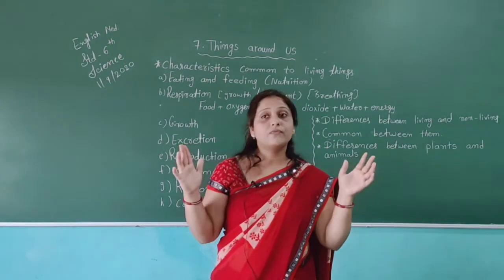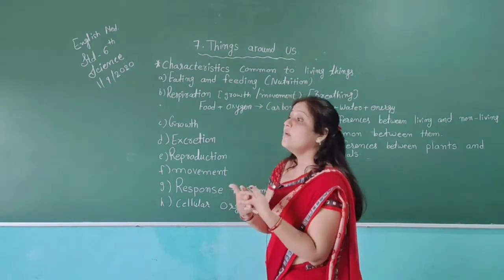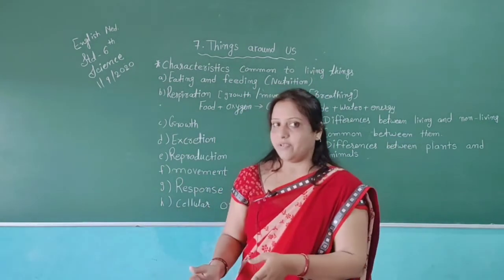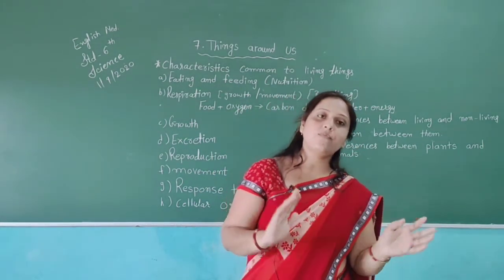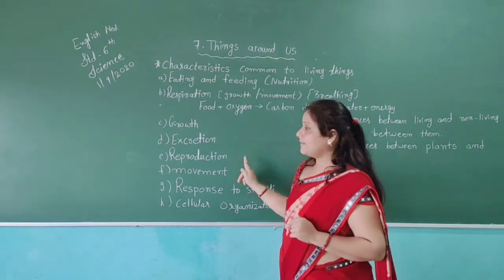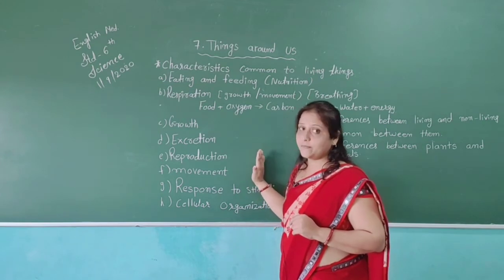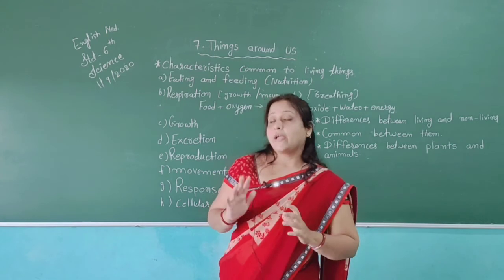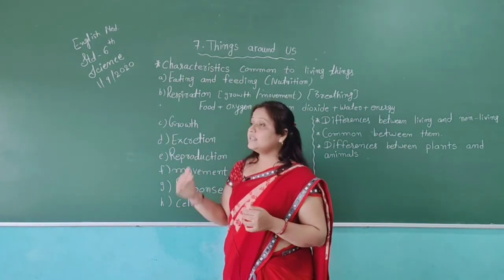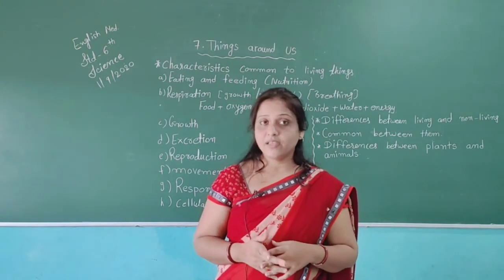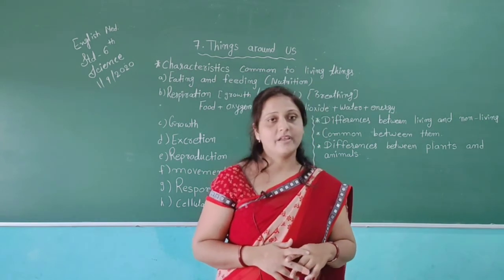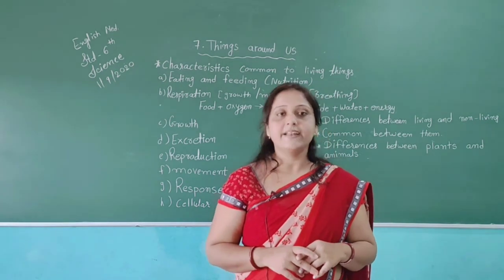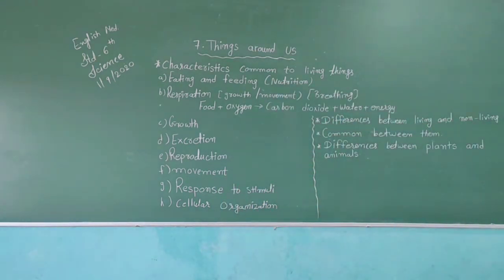So in this session we discussed things around us. We are surrounded by different types of things, and all things can be classified into two categories: living and non-living. We learned the different characteristics of living things, and using these characteristics we can easily classify living and non-living things, as well as the differences between plants and animals. I hope after this session you can easily classify which things are living and which are non-living. Chapter number seven is finished here. We will meet in our next session with chapter number eight. Till then, take care.